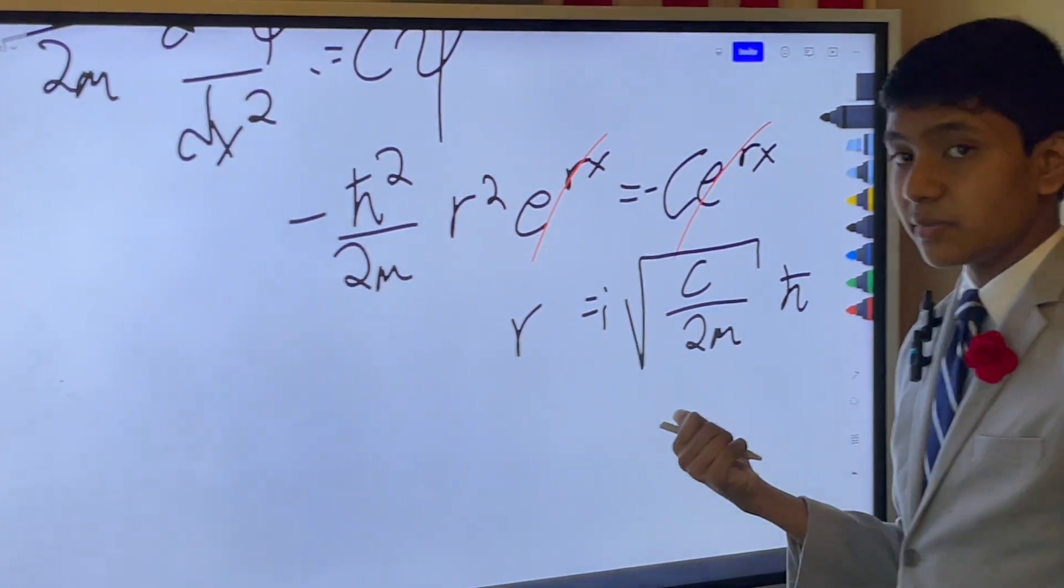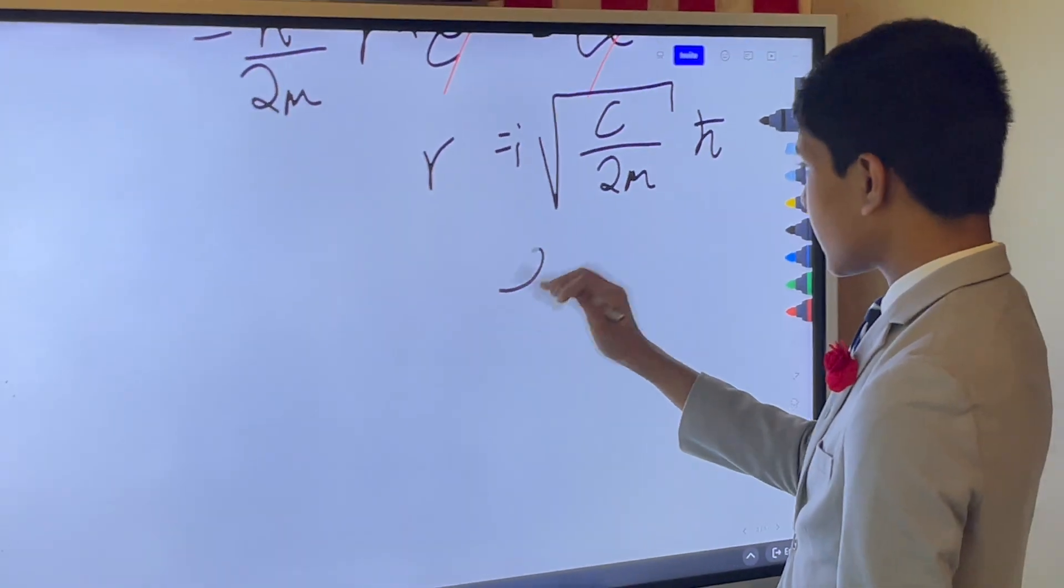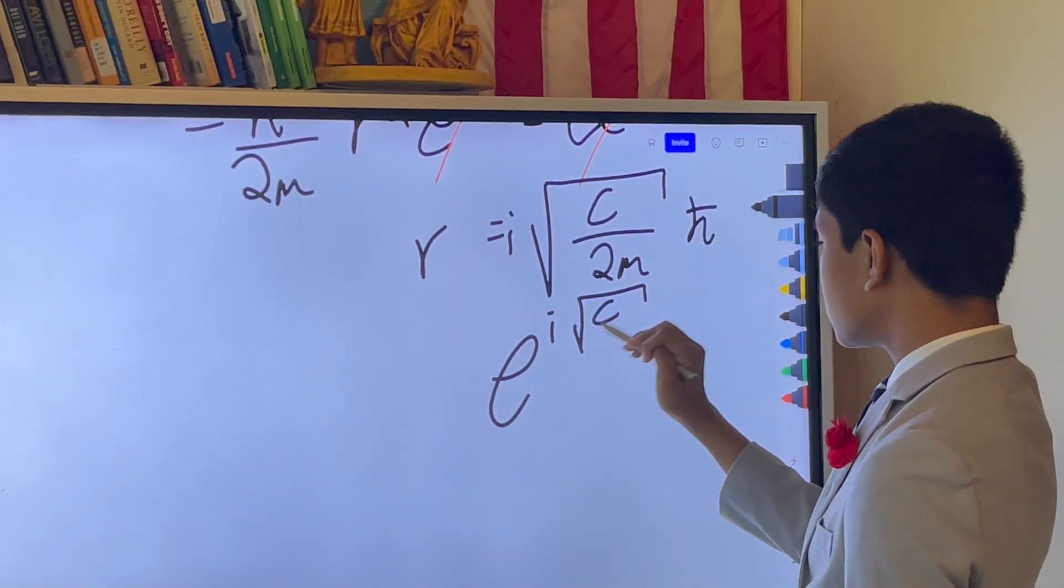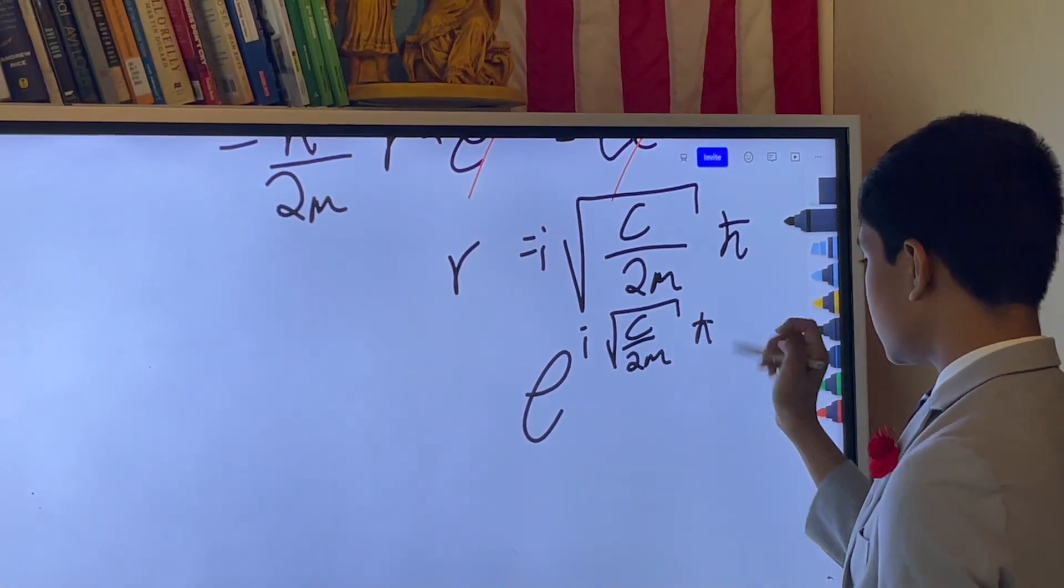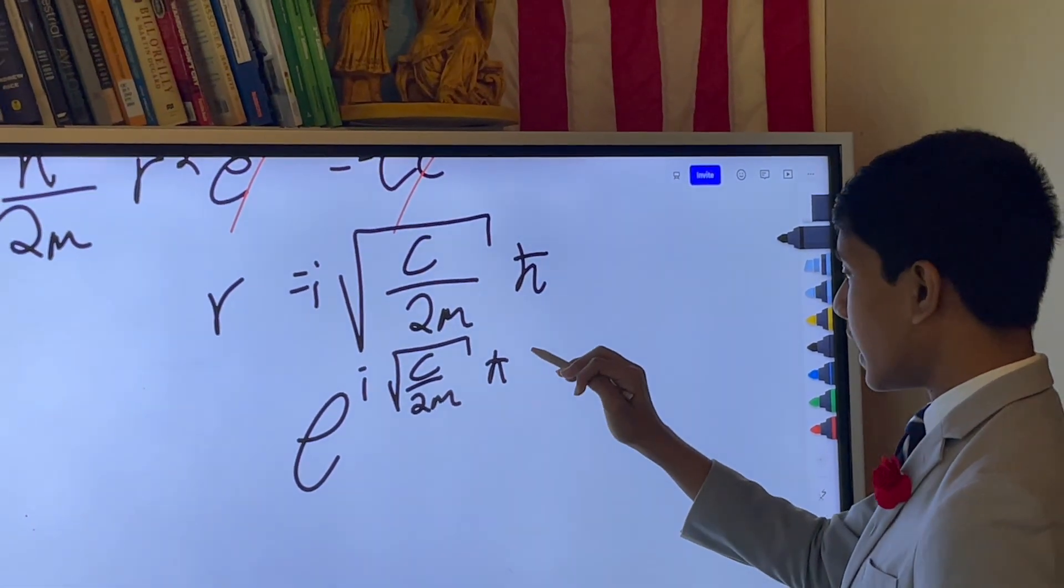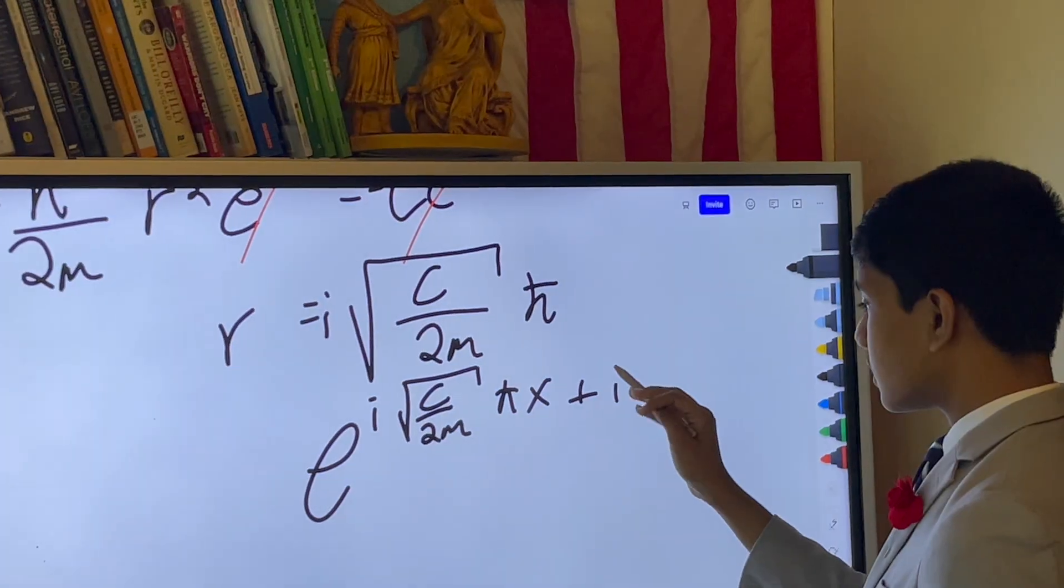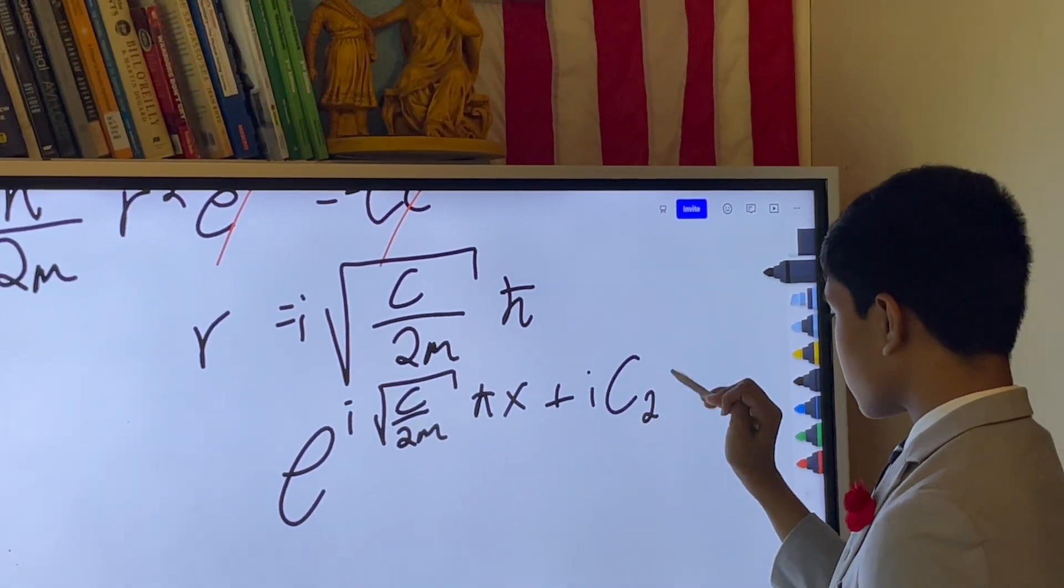And you get i c over 2m h bar. And what does that mean? Well, at the end of the day, you're getting e to the i square root of c over 2m h bar x plus i, another constant, t.